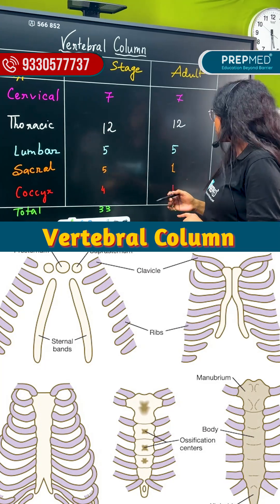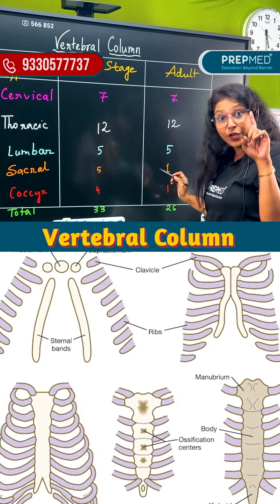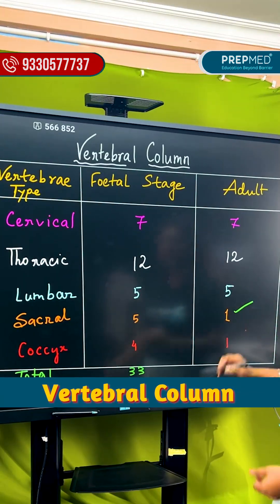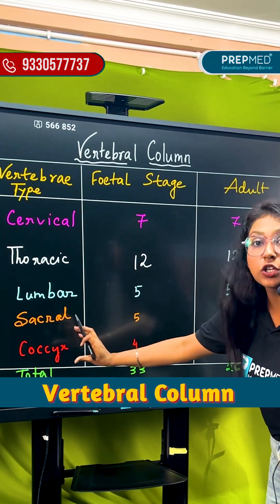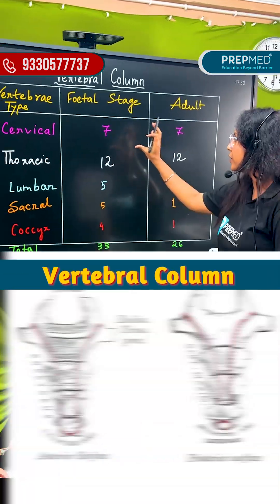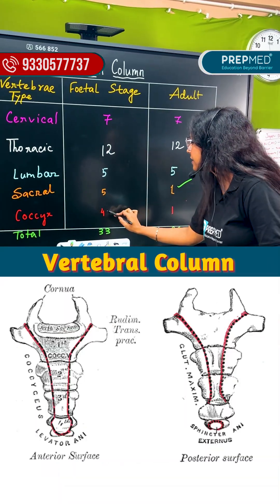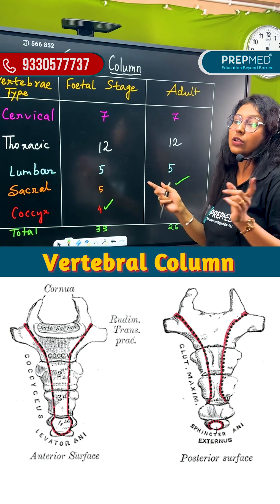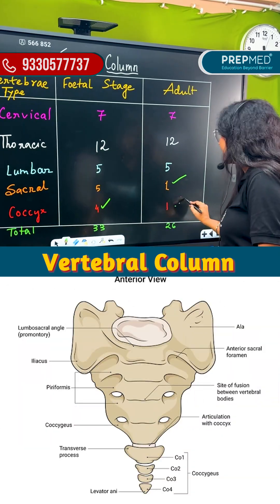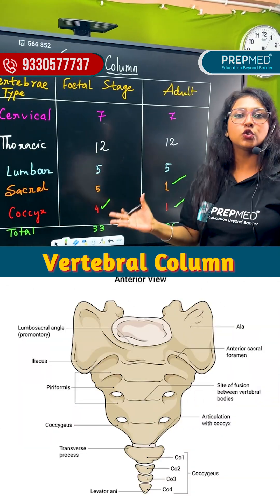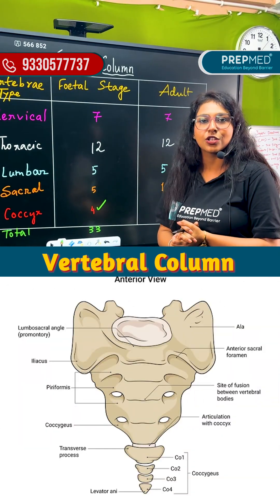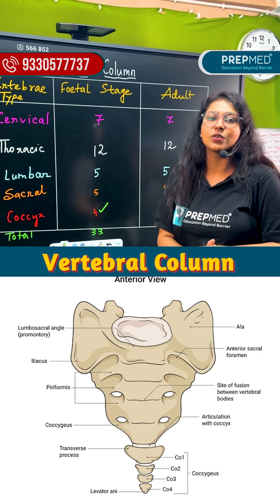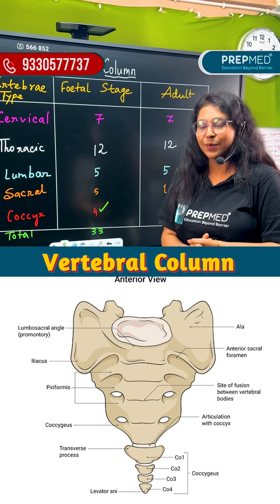But during the adult stage, it's fused. Now the coccyx — during the fetal stage, there are 4 coccyx. But in the adult stage, it's fused. Then the total number of vertebrae in the adult stage is fused.